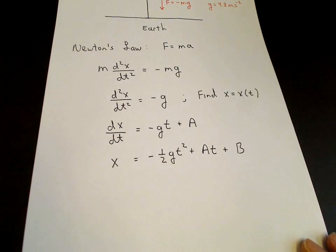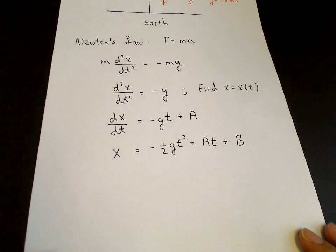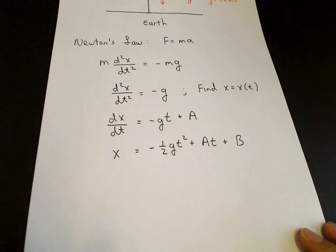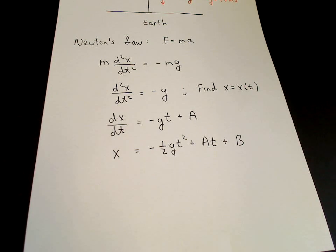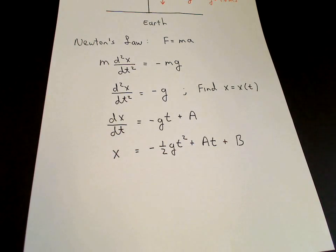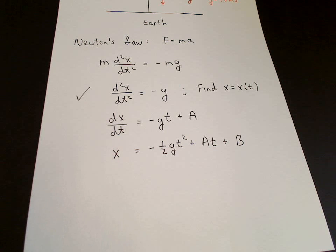So now we've integrated our differential equation, starting with an equation for d squared x dt squared. We found an equation for x. But the equation has two integration constants in it, a and b. So to solve a differential equation, this differential equation, it's not sufficient just to know the differential equation. We also need conditions to determine the integration constants a and b.